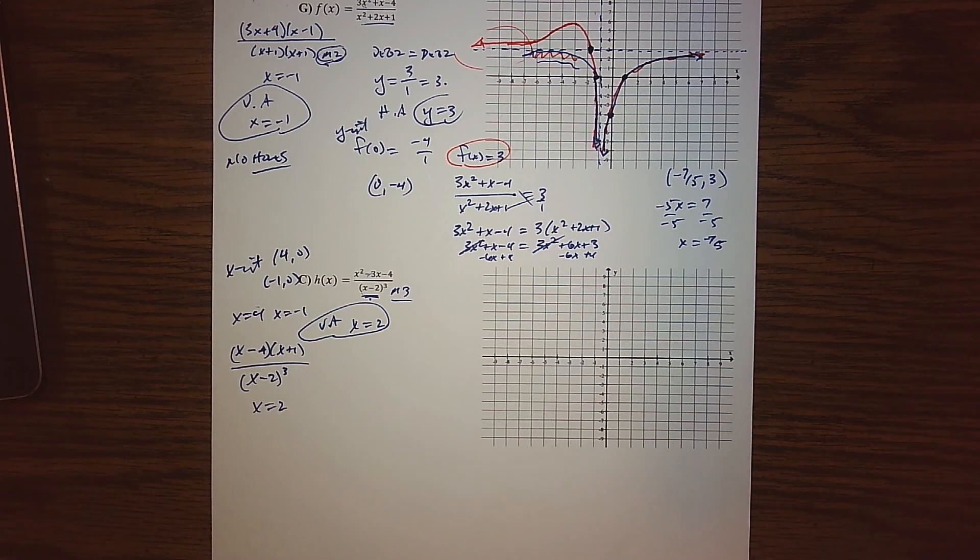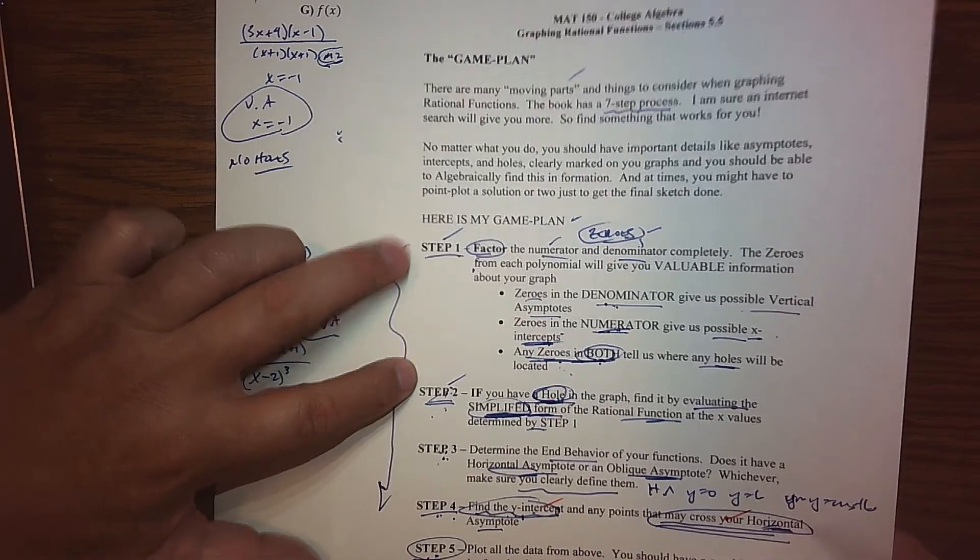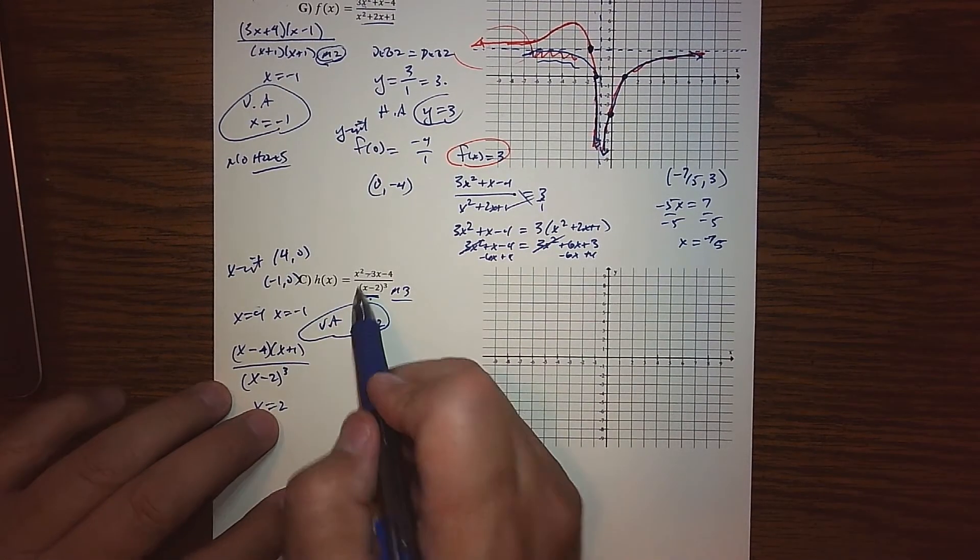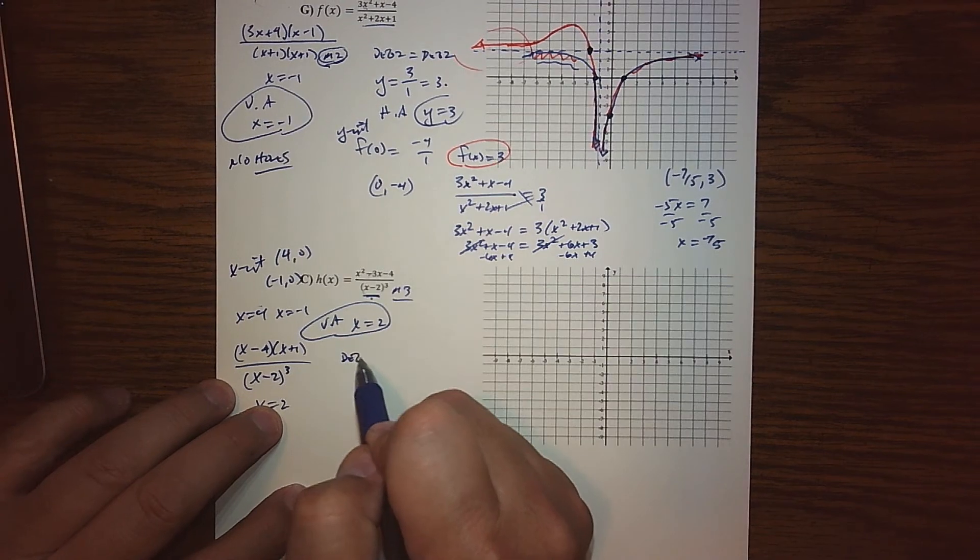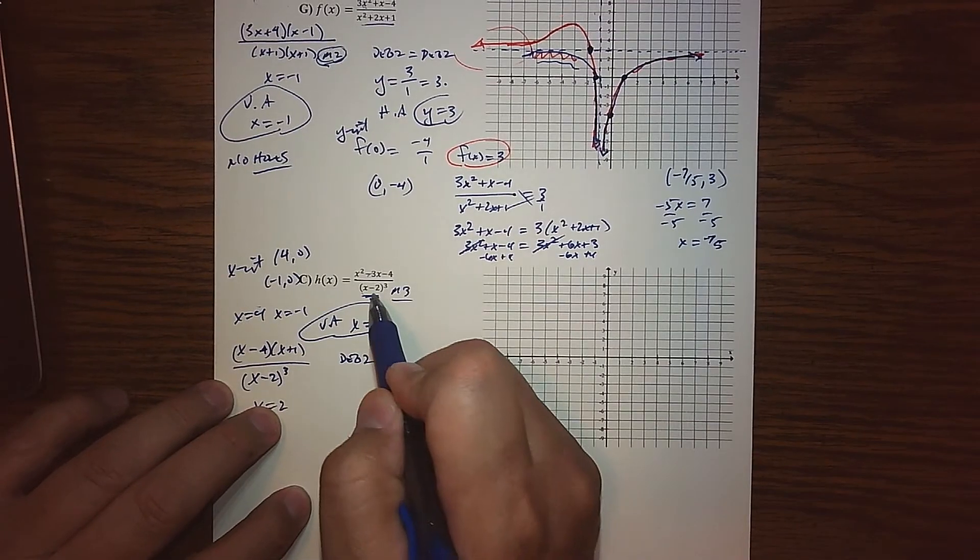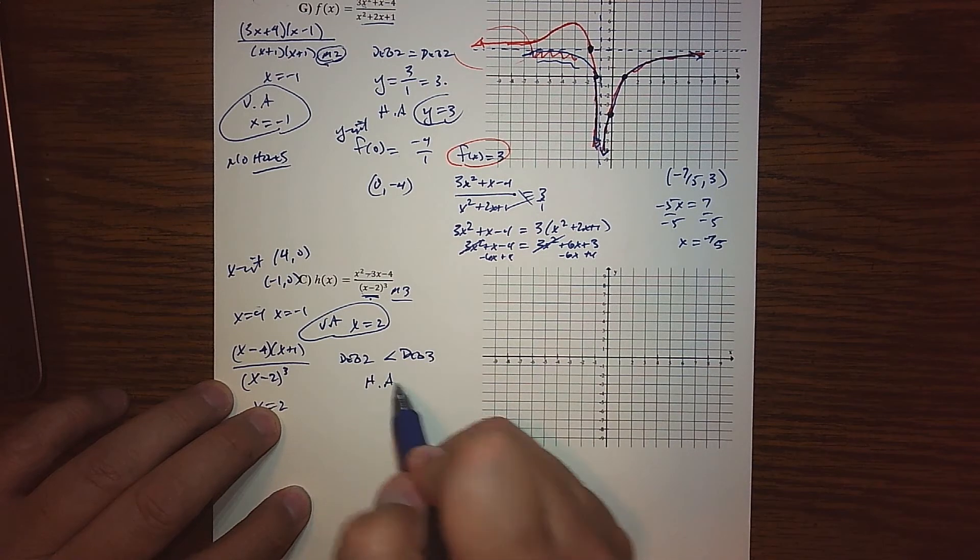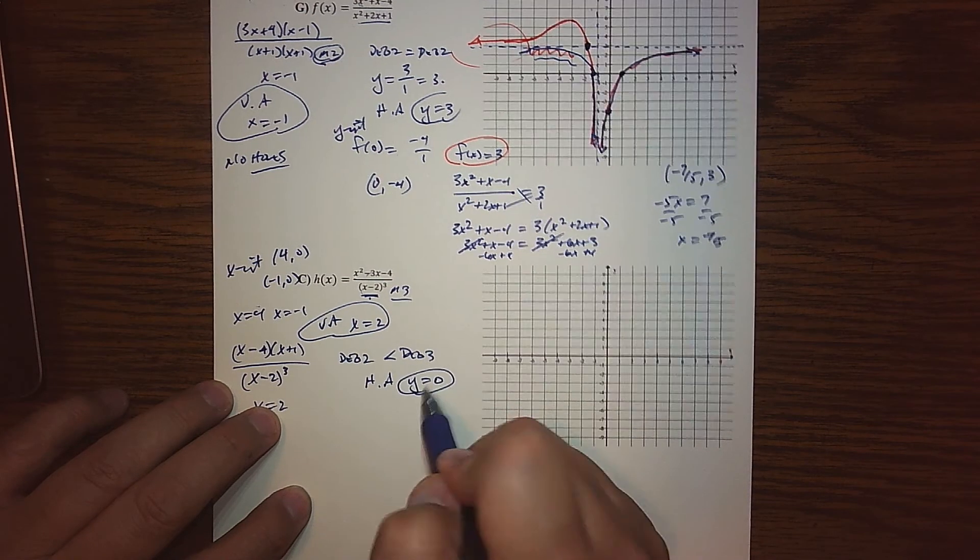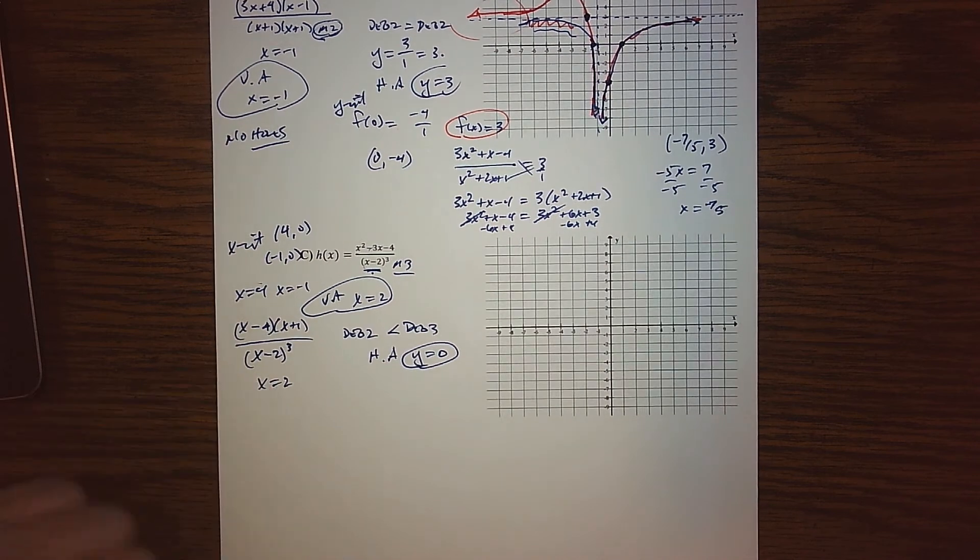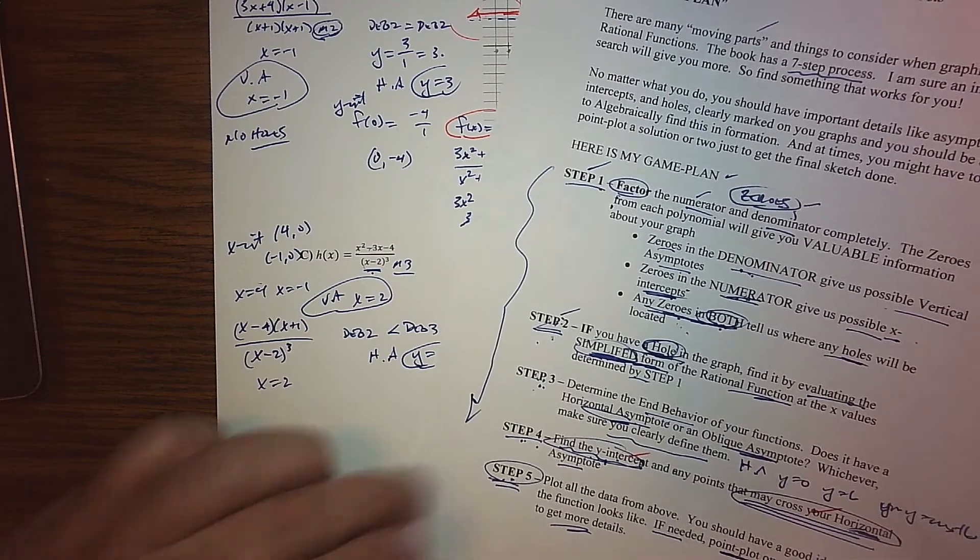So my x-intercepts are at 4, 0 and negative 1, 0. My vertical asymptote is x equals 2. There's no holes, so I don't have to worry about that. So step one, step two are done. Step three: what's the end behavior?